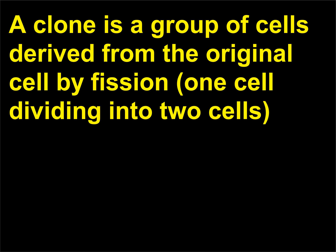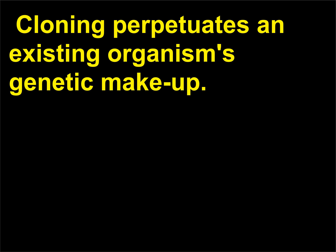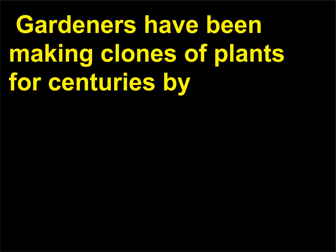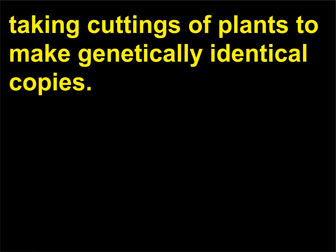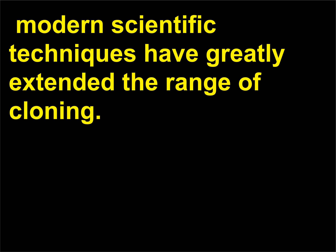A clone is a group of cells derived from the original cell by fission, one cell dividing into two cells, or by mitosis, cell nucleus division with each chromosome splitting into two. Cloning perpetuates an existing organism's genetic makeup. Gardeners have been making clones of plants for centuries by taking cuttings of plants to make genetically identical copies. For plants that refuse to grow from cuttings or for the animal world, modern scientific techniques have greatly extended the range of cloning.